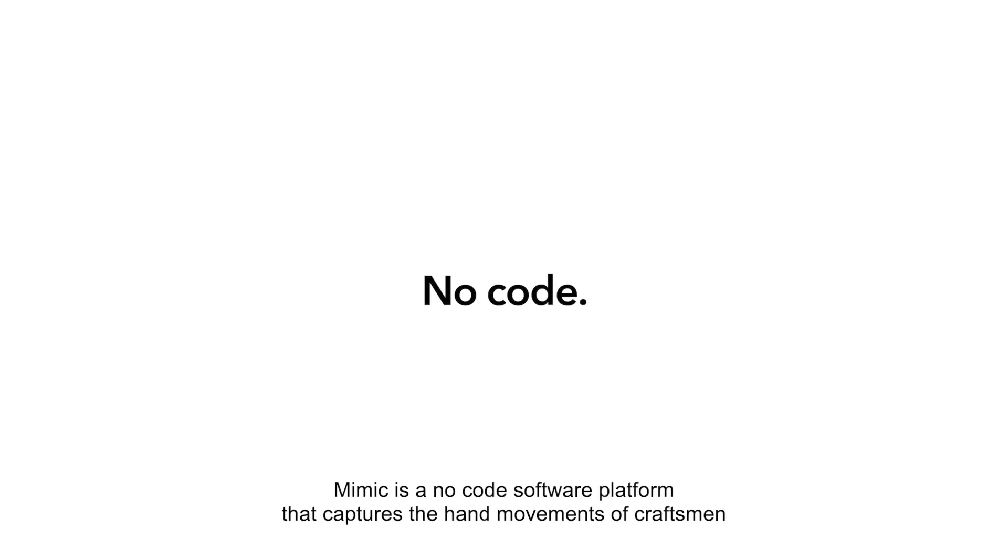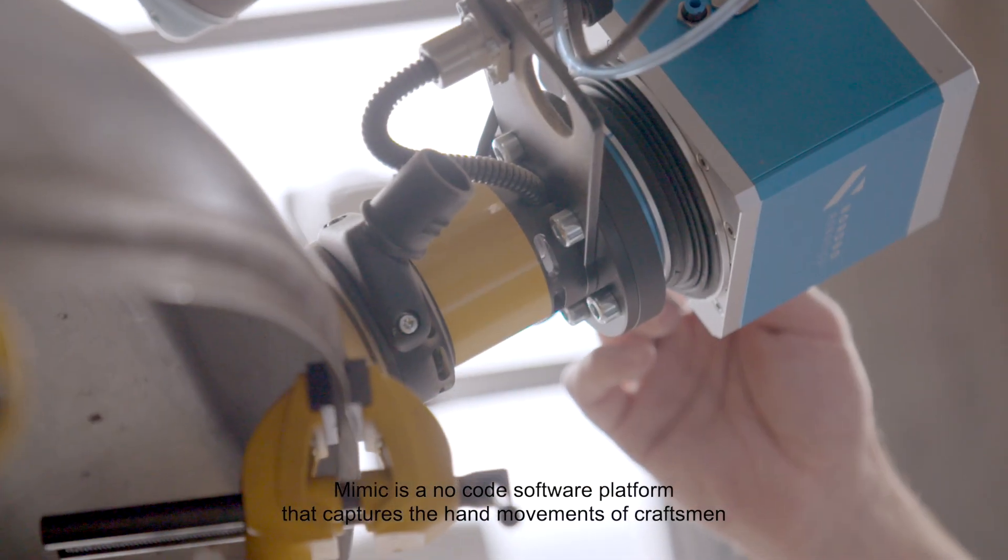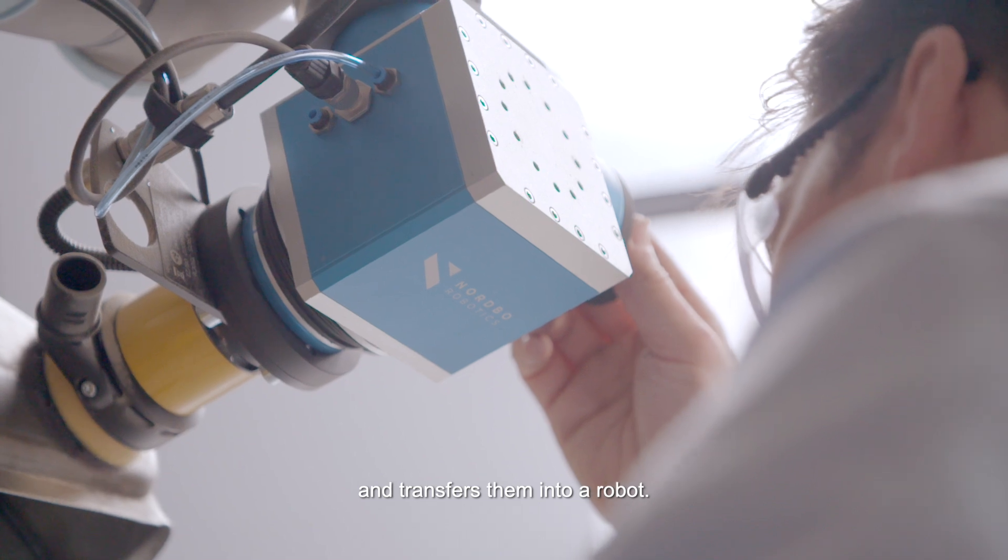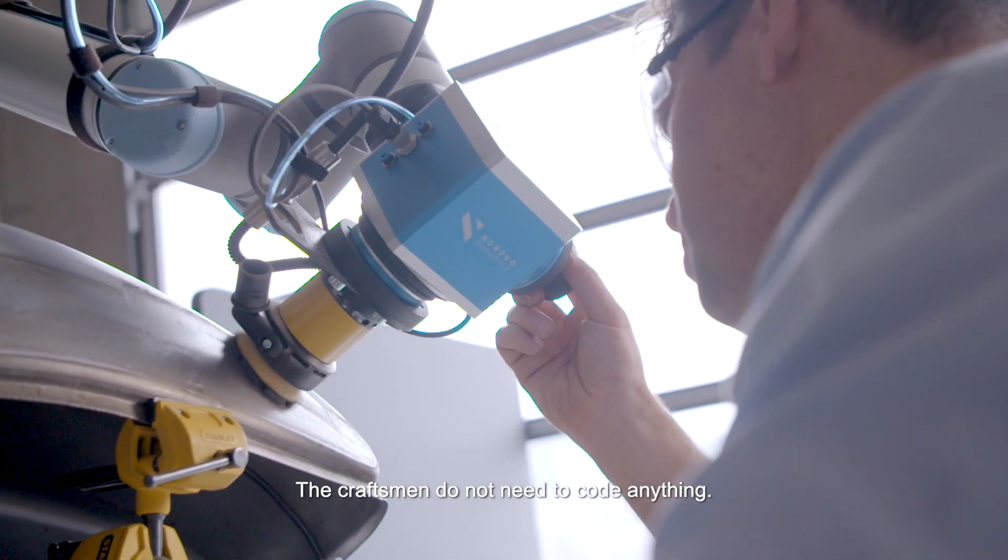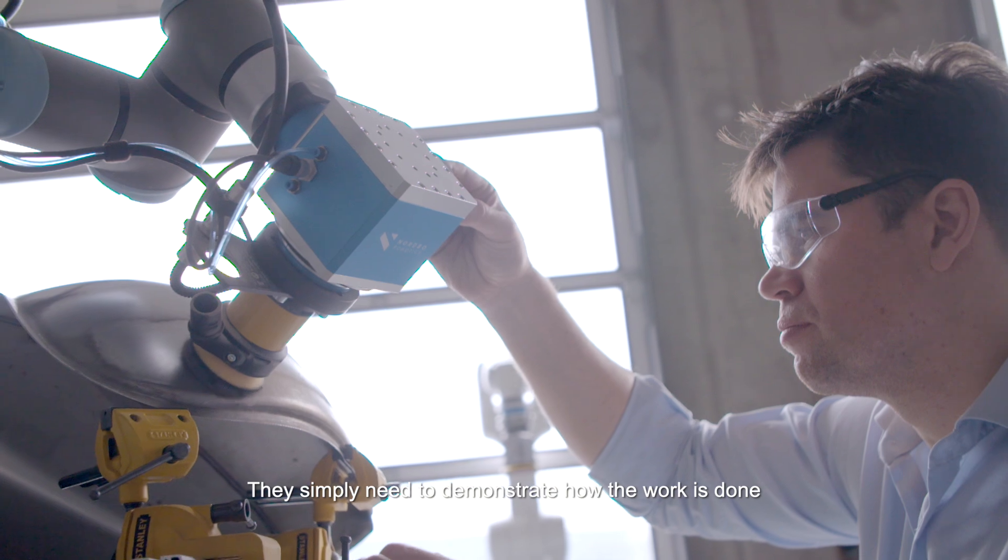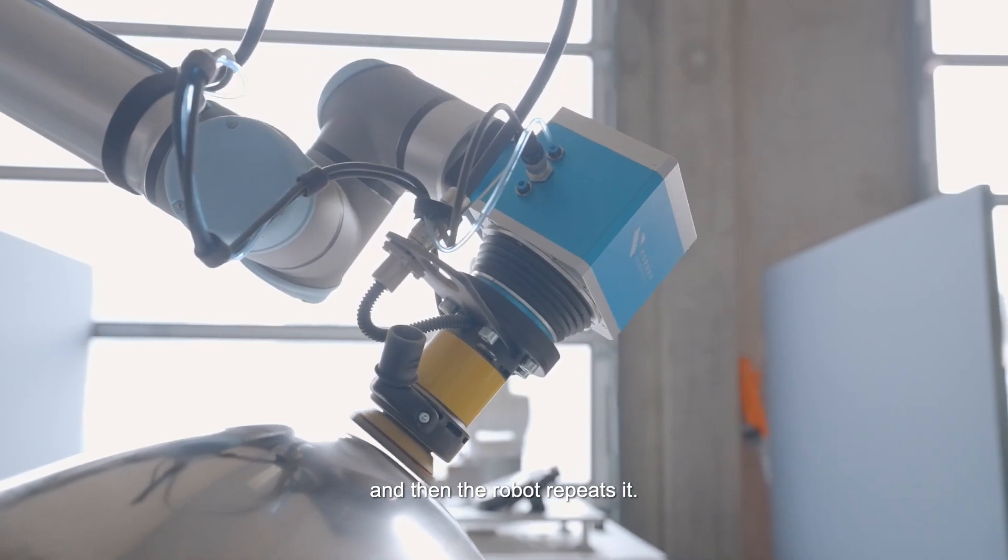Mimic is a no-code software platform that captures the hand movements of craftsmen and transfers them into a robot. The craftsmen do not need to code anything. They simply need to demonstrate how the work is done and then the robot repeats it.